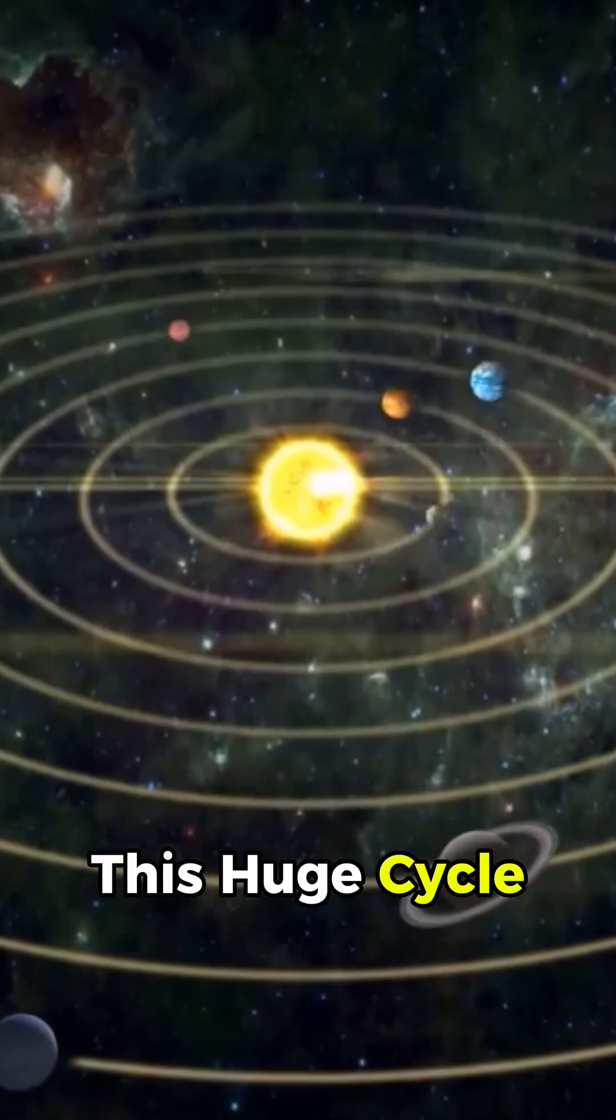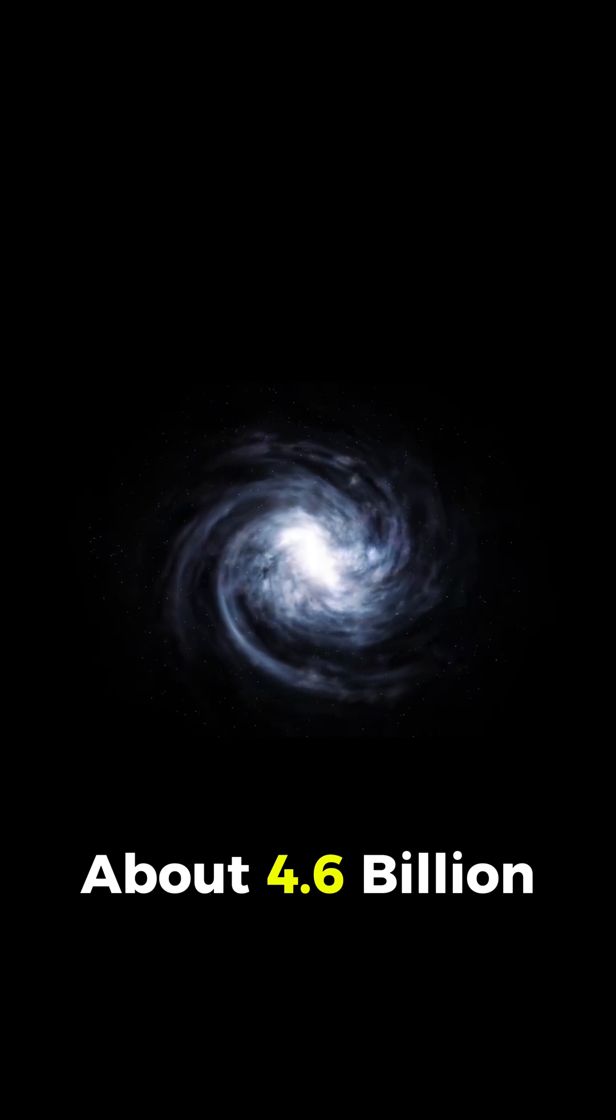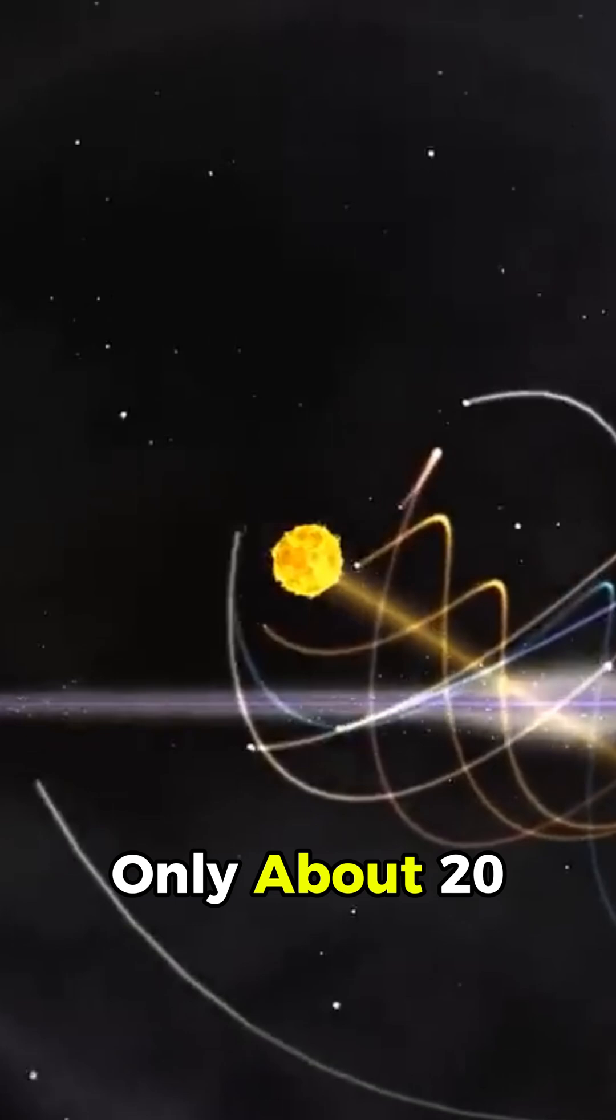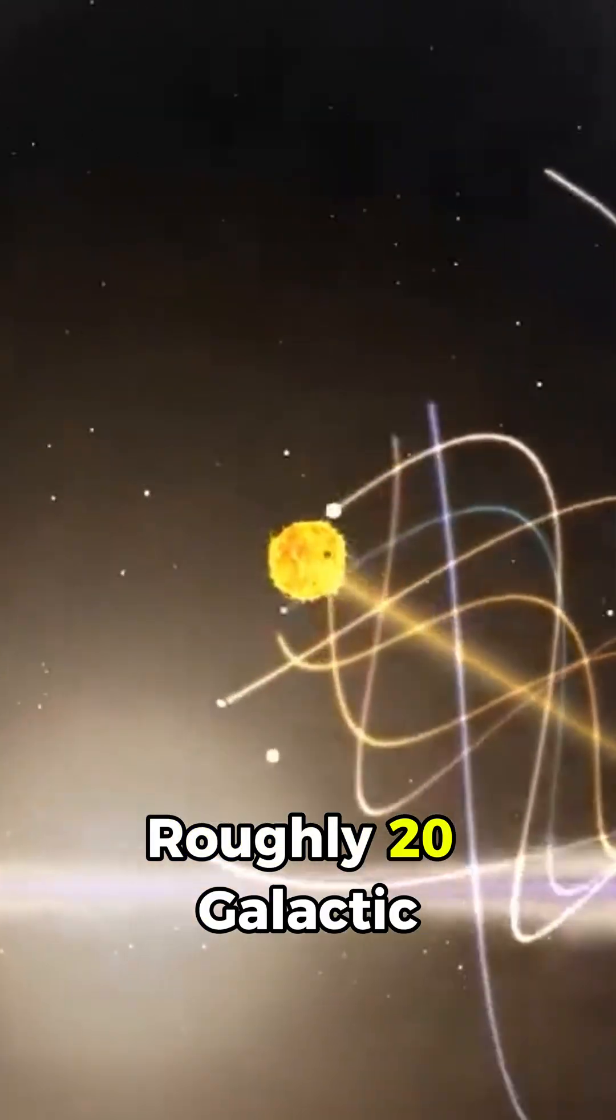This huge cycle is called a galactic year. The sun is about 4.6 billion years old, which means it has completed this long trip only about 20 times. In other words, our sun is roughly 20 galactic years old.